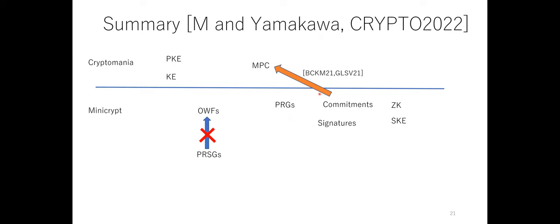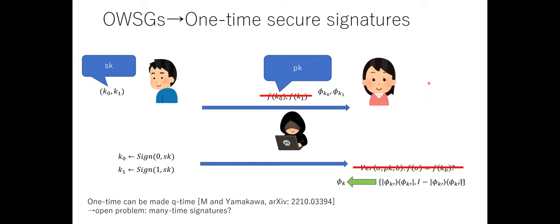Q: When you said from one-time we can construct Q-time — what is Q? A: Q is some fixed polynomial, but in many-time security, this polynomial should be unbounded. So Q is a fixed polynomial, but many-time requires an unbounded number of signing queries.